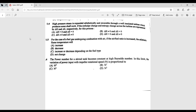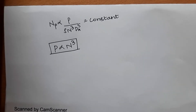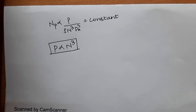Question 1.6: the power number of a stirred tank becomes constant at high Reynolds number. The variation of power input with impeller rotational speed is proportional to what? It is given that the power number NP is constant at high Reynolds number. NP is proportional to P/(ρN³·dₐ⁵), where N is the rotational speed, d is the impeller diameter, and NP is the power number.